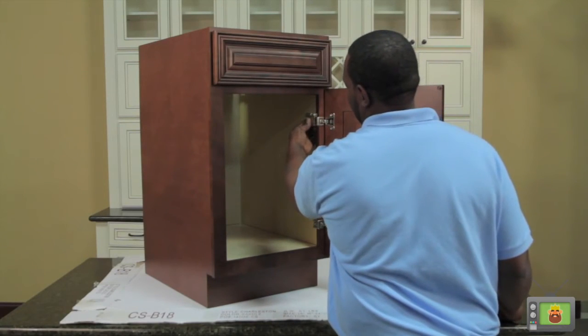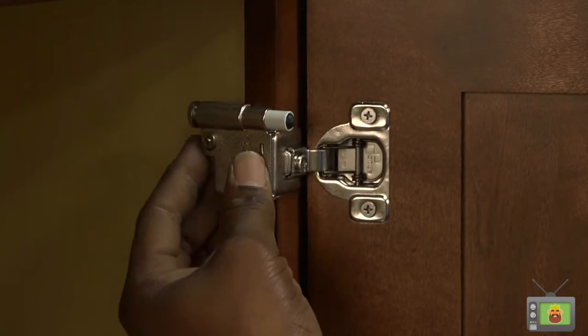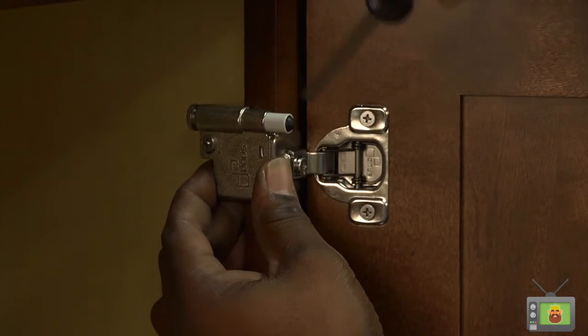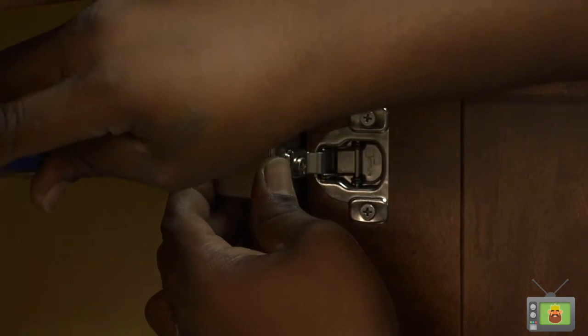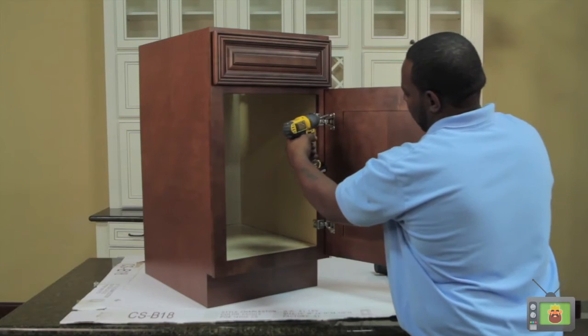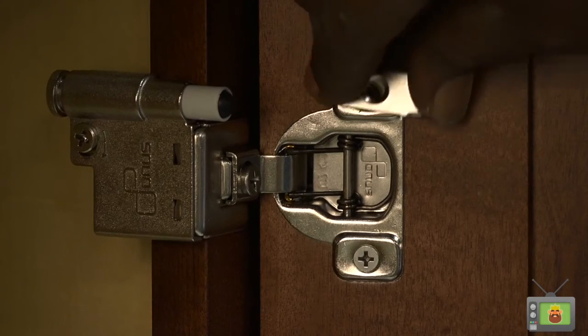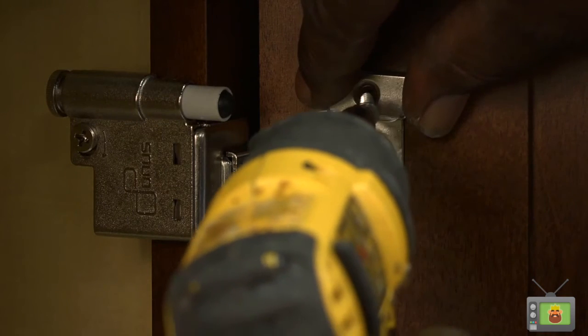Finally, you will install the soft close mechanism by placing it onto the top hinge attached to the face frame. Make a full turn on the screw on the soft close for completion. In the same location of the soft close, take the screw out of the hinge and reinstall the screw with riser attached.